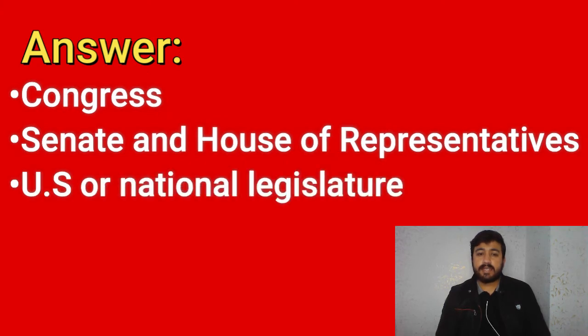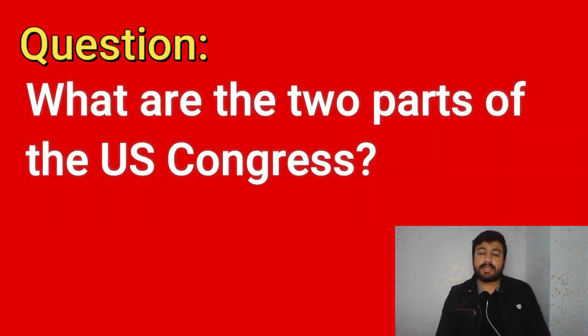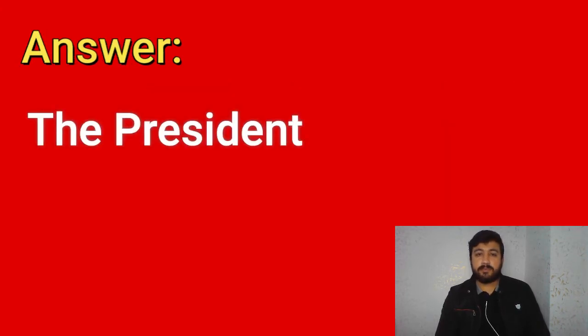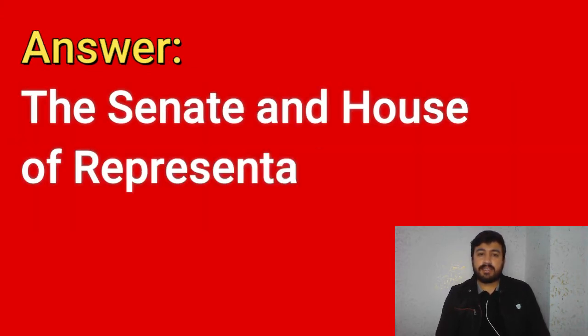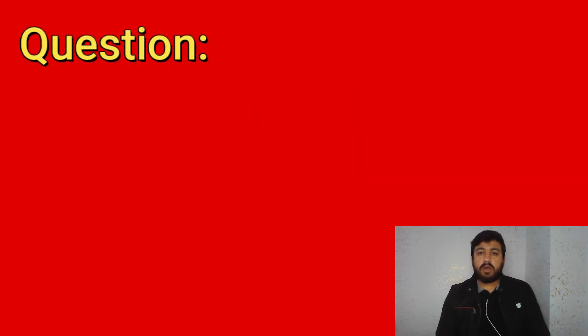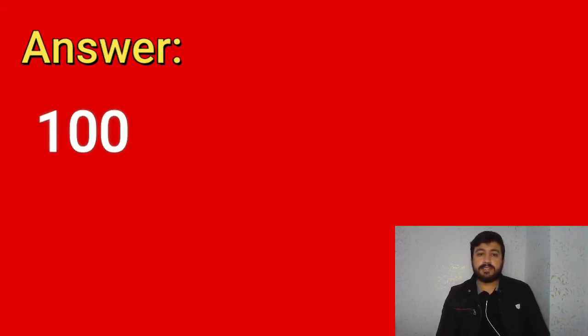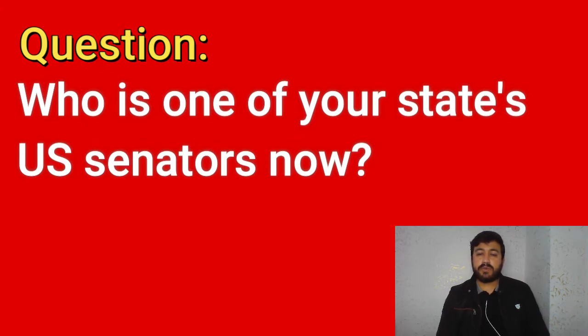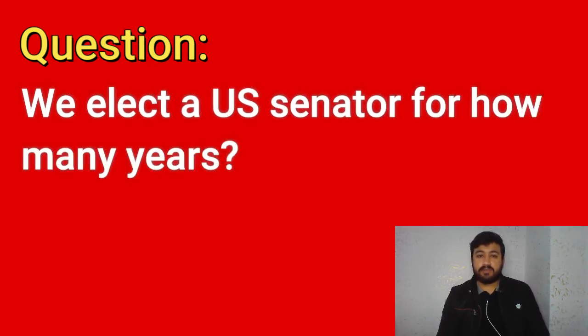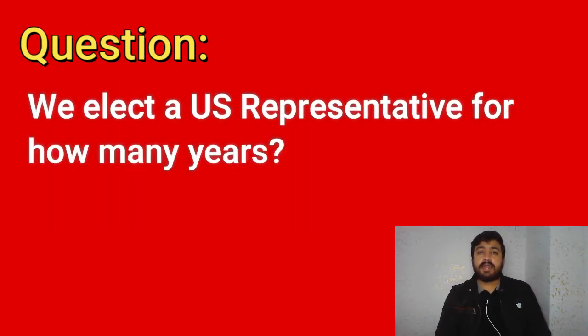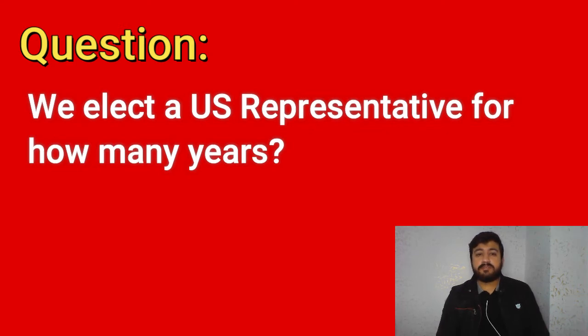Name one branch or part of the government. Congress — legislative; President — executive; the courts — judicial. Who makes federal law? Congress, the Senate and House of Representatives, the U.S. or national legislature. Who is in charge of the executive branch? The President. What are the two parts of U.S. Congress? The Senate and House of Representatives. How many U.S. senators are there? 100. We elect a U.S. senator for how many years? Six. We elect a U.S. representative for how many years? Two.